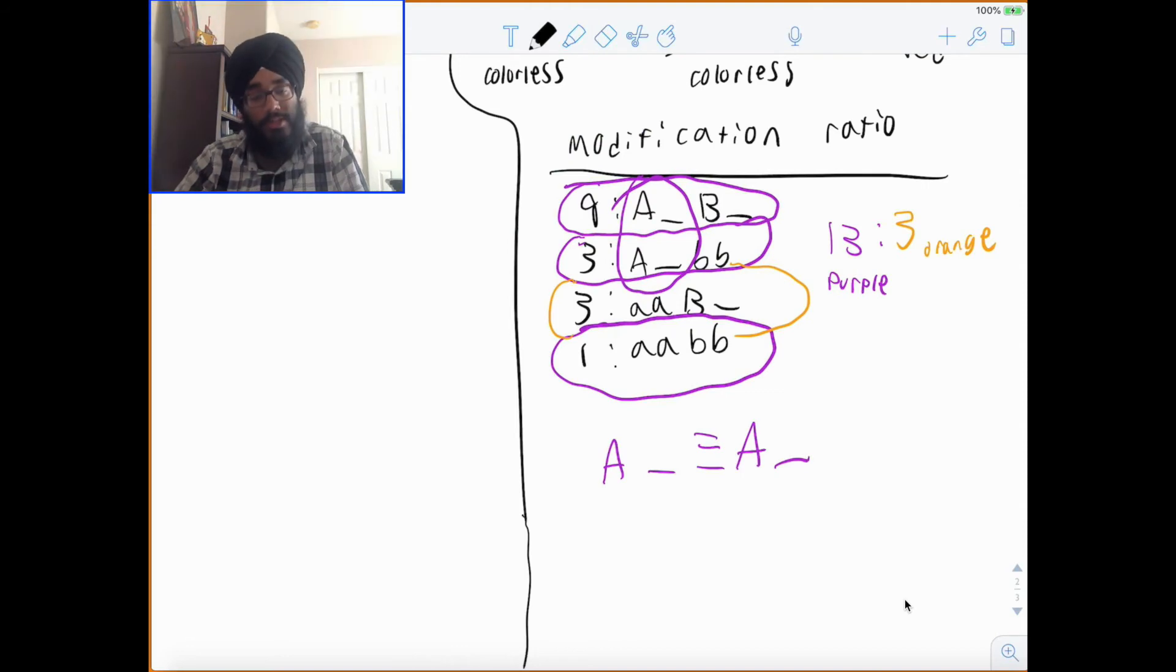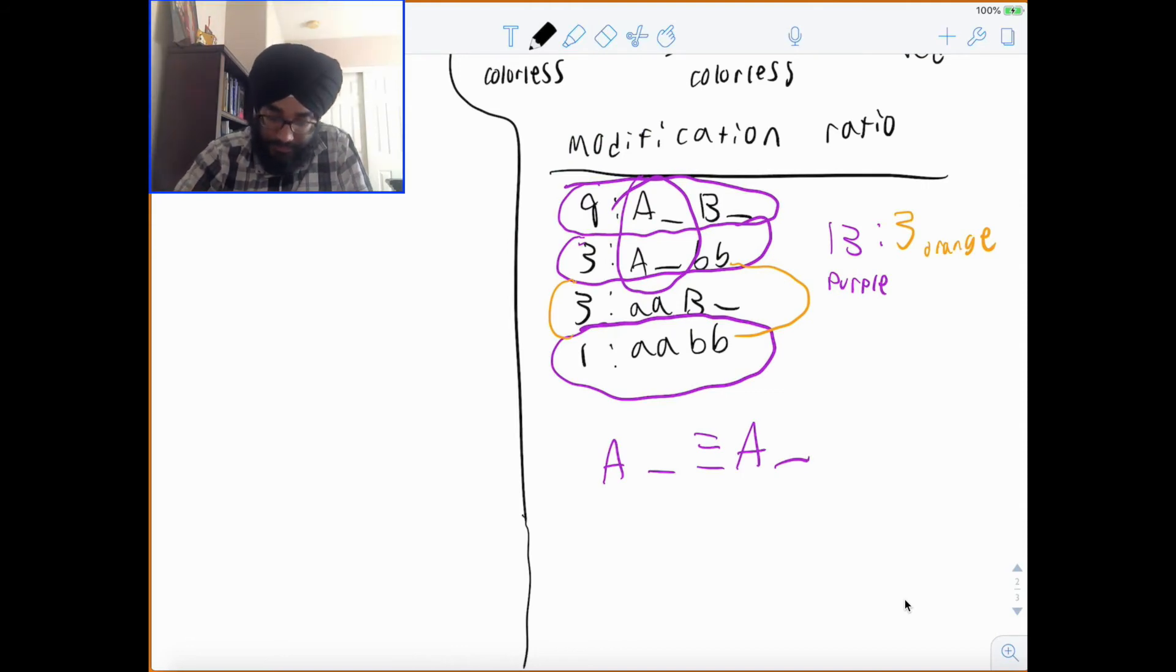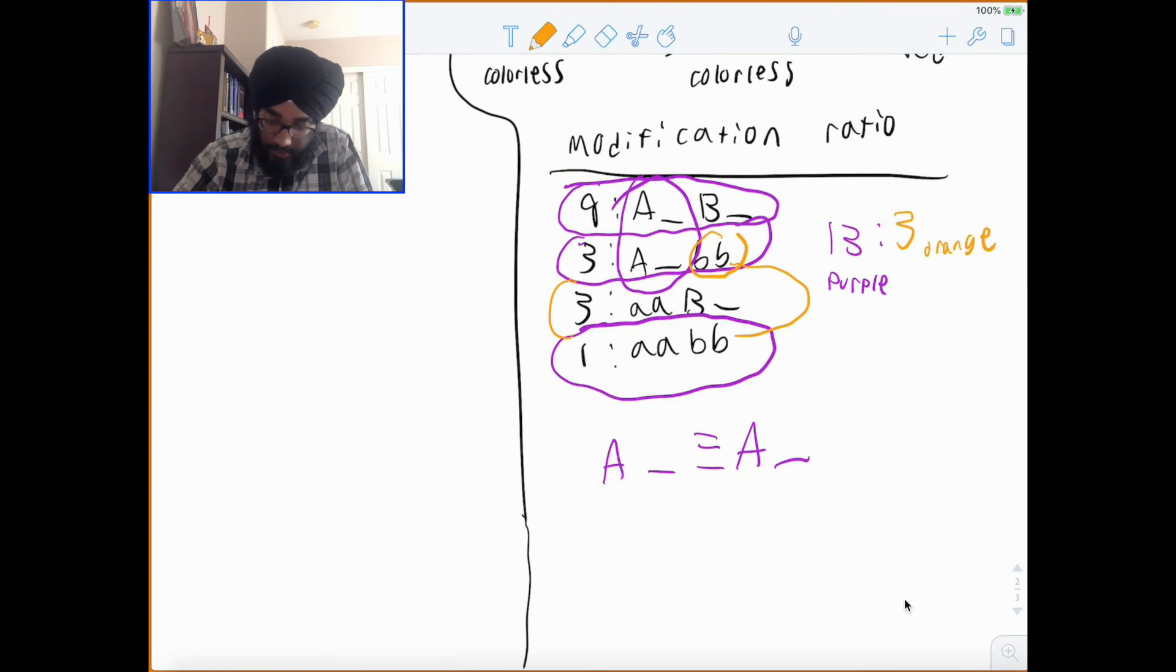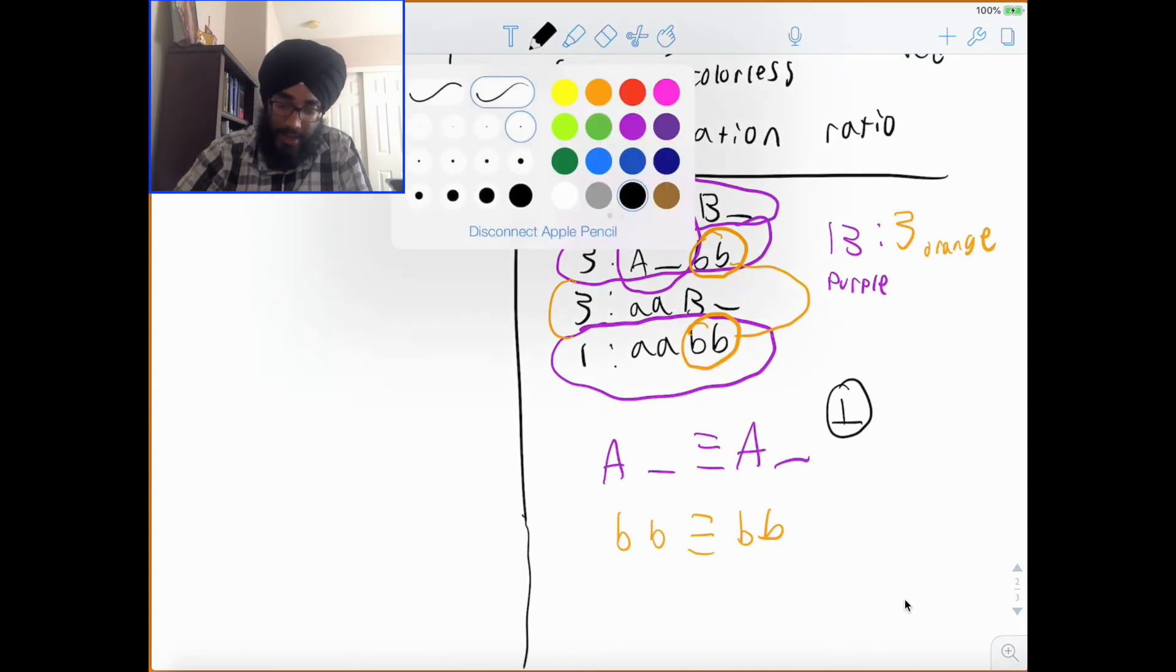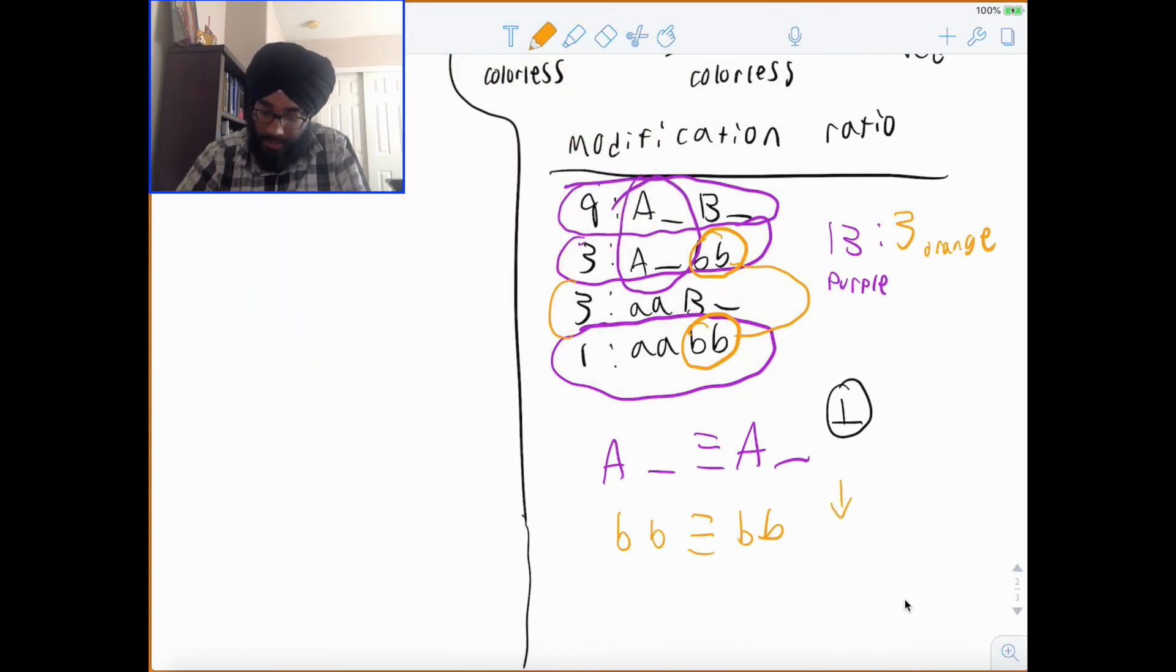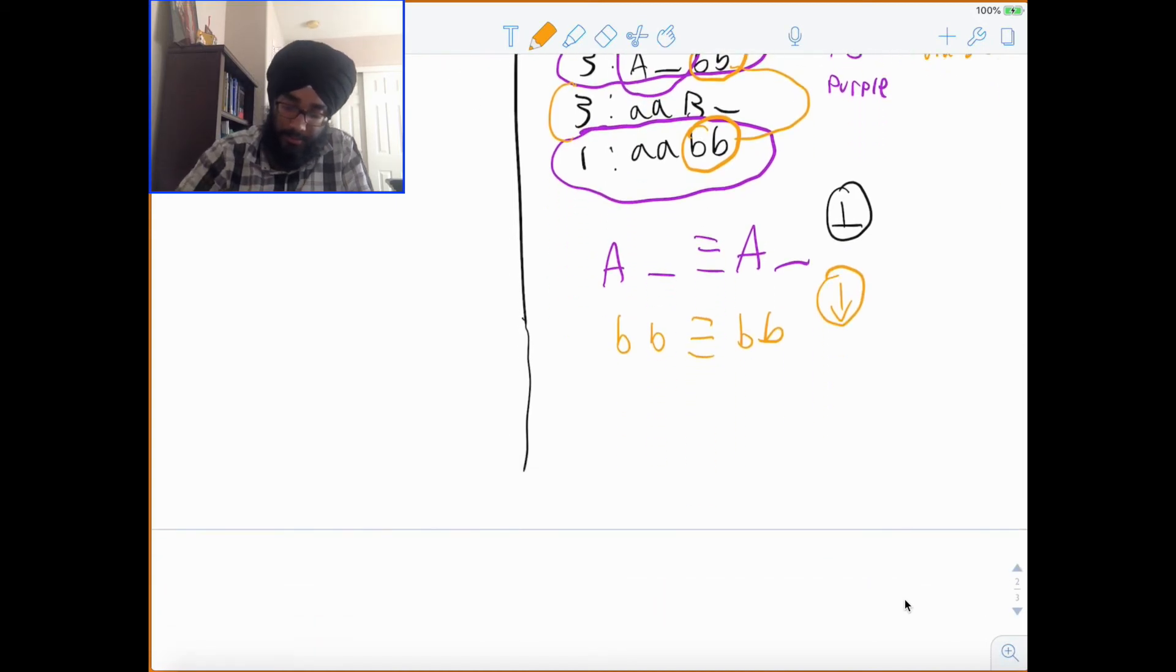Now, do I notice any other patterns? Yeah. I notice a BB here. And I notice a little BB here. So, what are these patterns? Well, this is the same thing I saw in my dominant epistasis. This is the pattern for repression. And this, the B is the pattern for activation.